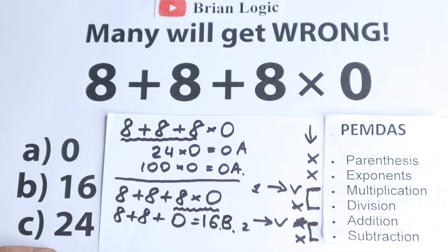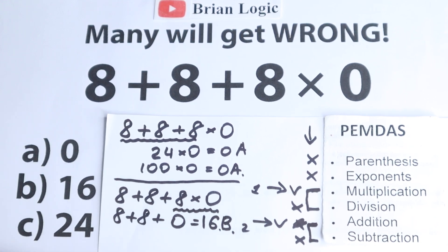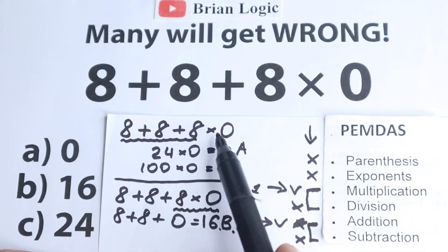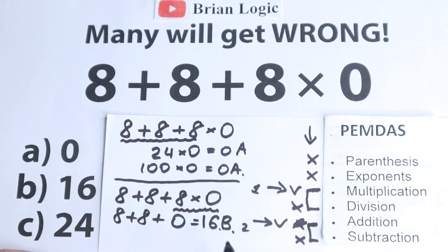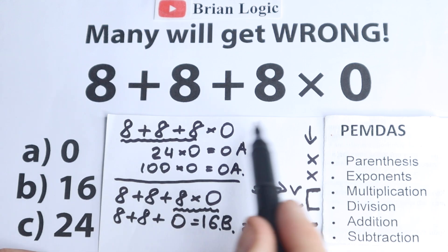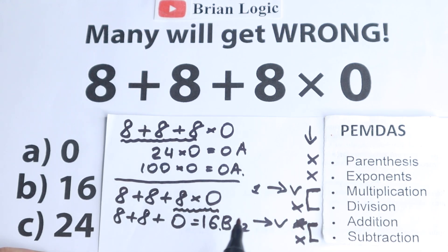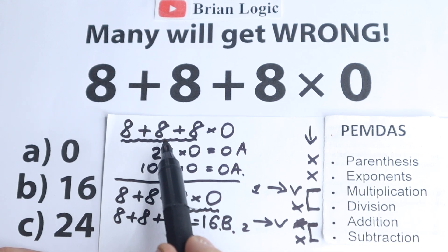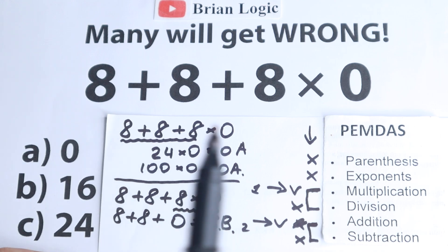Very interesting moment — what is the correct answer, 0 or 16? It looks like 0 could be correct because whatever value you have on the left-hand side, if you multiply by 0 you get 0, so 24 times 0 equals 0. But I want to say one really important thing: that is absolutely the wrong solution. Forget about that solution, because the rule is addition comes after multiplication — you always do multiplication first, then addition. This is a very big mistake.